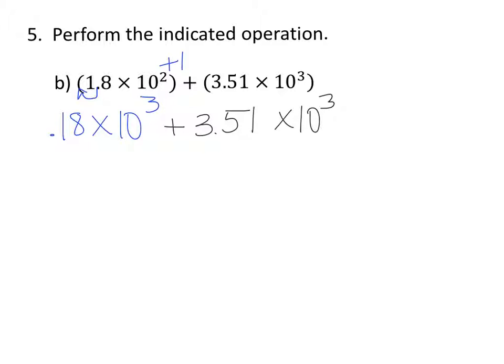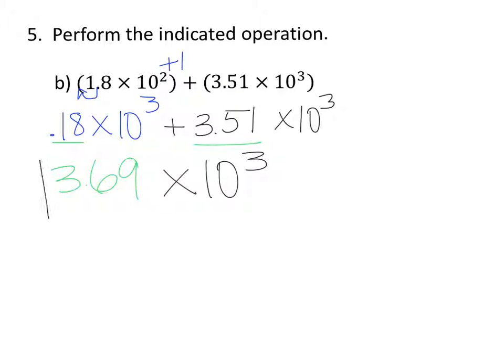Now that we have the same exponent, we're going to keep that exponent, and we're going to add the numbers. So 0.18 plus 3.51 equals 3.69, and then we're going to keep that exponent the same. So the final answer is 3.69 times 10 to the 3rd.